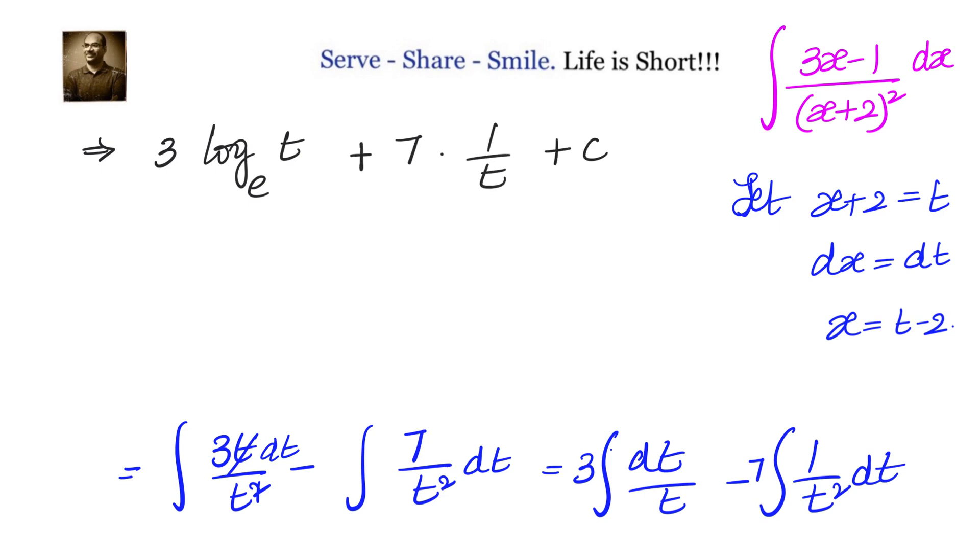Let us change this back to x. We will have 3 natural logarithm or logarithm to base e of t, that is x plus 2, plus 7 by t, that is 7 by x plus 2, plus c.